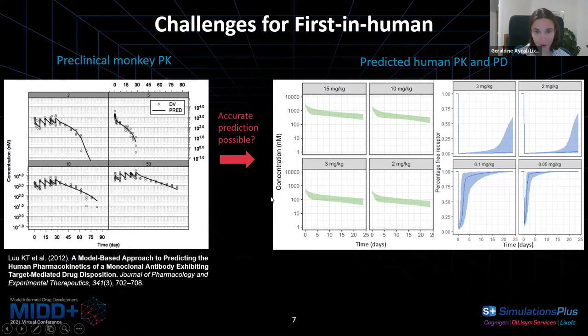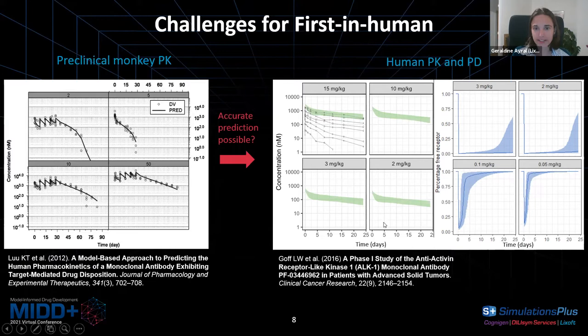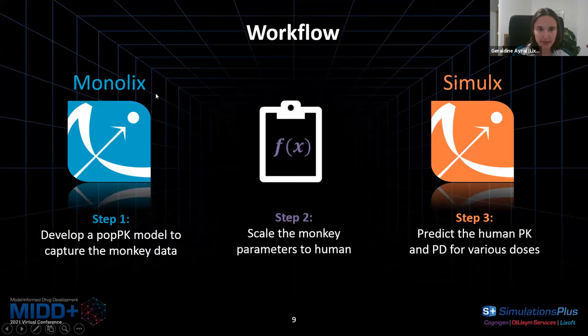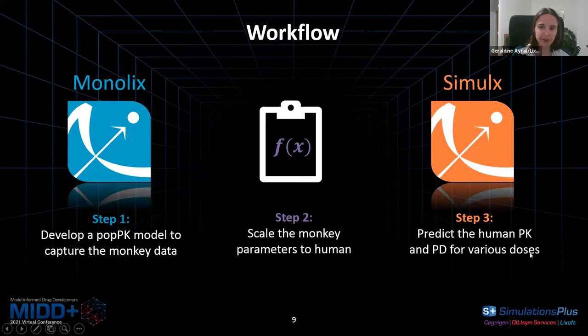Doing a prediction is always simple — what is hard is doing a correct prediction. So we are going to compare our prediction to the actual phase 1 data that has already been published to check if our prediction is correct. The workflow is: first develop a population PK-PD model on the preclinical monkey data using the Monolix application, then scale the estimated monkey parameters to humans, and finally use the scaled model to predict human PK-PD for various dose levels using the Simulix application.